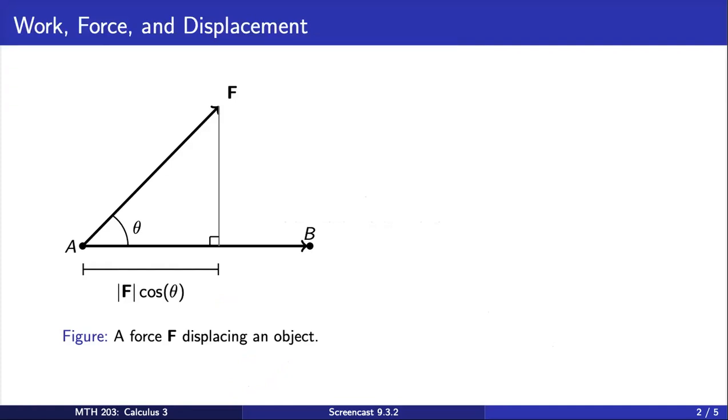In physics, work is a measure of the energy required to apply a force to an object through a displacement. The picture here shows a force F displacing an object from point A to point B. The force F can be represented by a vector, since the force has both a magnitude and a direction. Similarly, the displacement of the object from A to B can be represented by the vector from A to B.